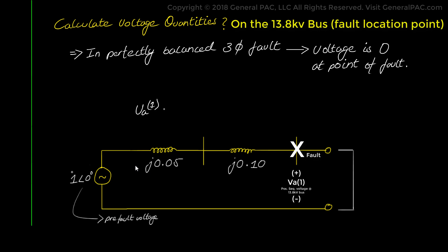So the positive sequence voltage at the 13.8 kV bus is going to equal one at the angle of zero degrees which is our pre-fault voltage or source voltage minus the total impedance between the source and the point of the fault which is j0.15 per unit times the current that's flowing through it which is -j6.67 per unit.